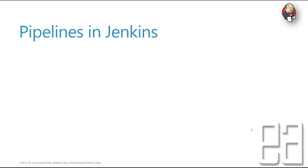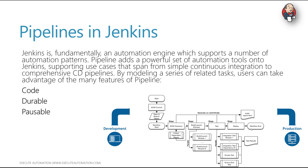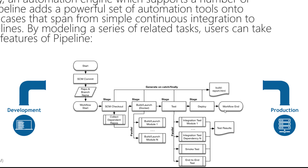Jenkins is fundamentally an automation engine which supports a number of automation patterns. Pipelines add a powerful set of automation tools supporting use cases that span from simple continuous integration to comprehensive CD pipelines. By modeling a series of related tasks, users can take advantage of many pipeline features. The content and images shown here are taken directly from the Jenkins.io website.